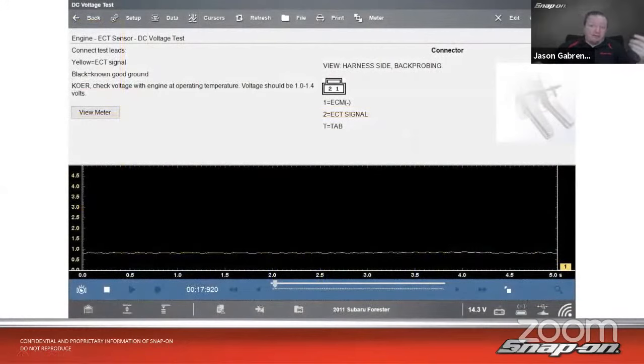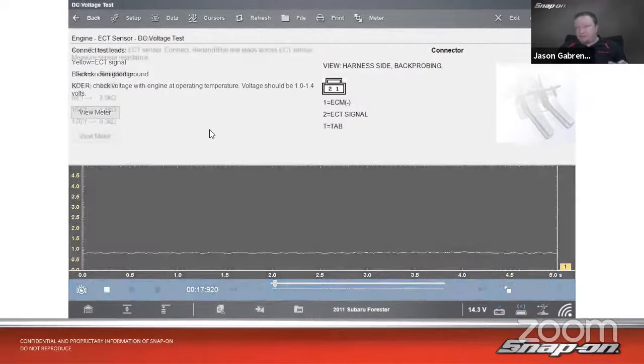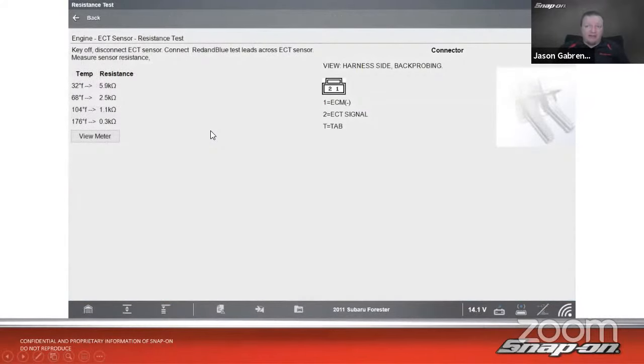There's a few ways we can test these. We have a voltage test, and then we also have a resistance test we could do. So this is just an example here of a voltage test. If the vehicle is at operating temperature, it should be 1 to 1.4 volts. And then as far as your resistance, oftentimes you will get a temperature versus resistance table. So in this case, on this sensor at 32 degrees, it's 5.9 kilohms, up to 176 degrees, you get 0.3 kilohms, and so on.